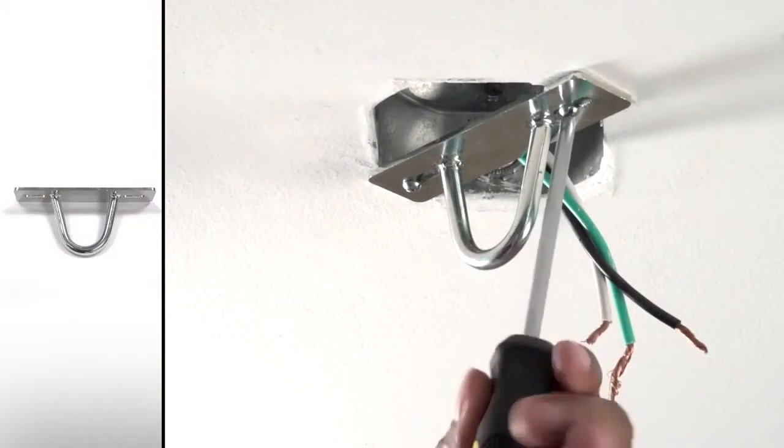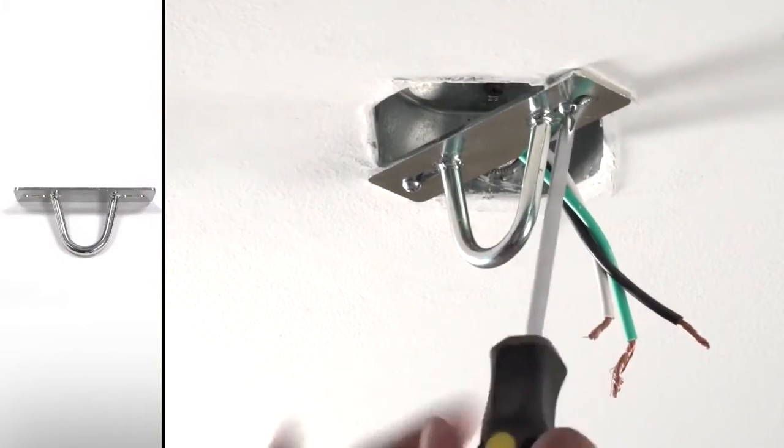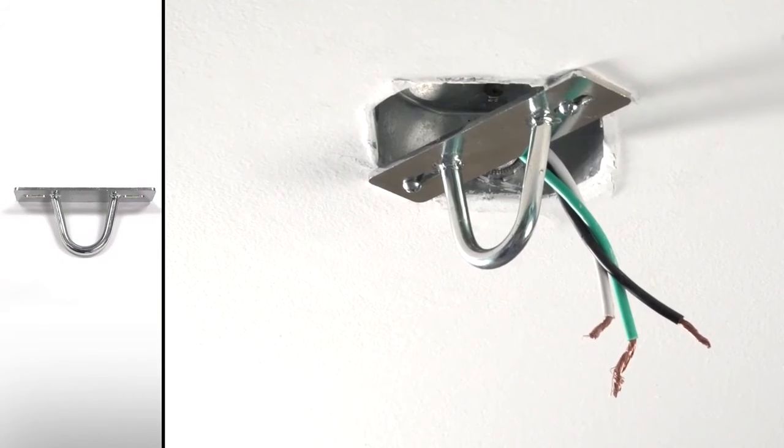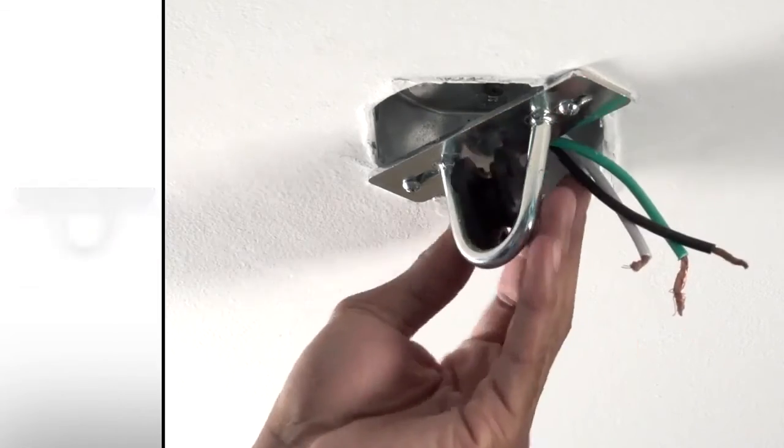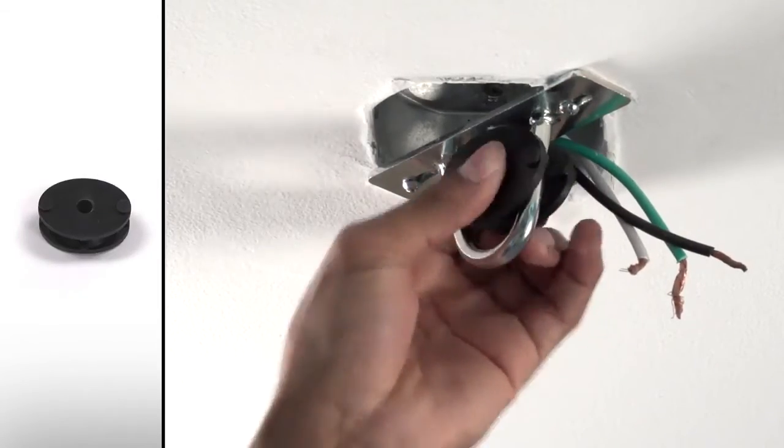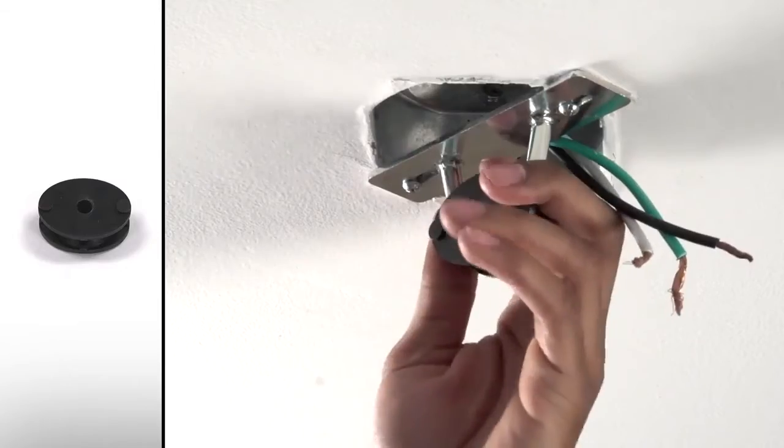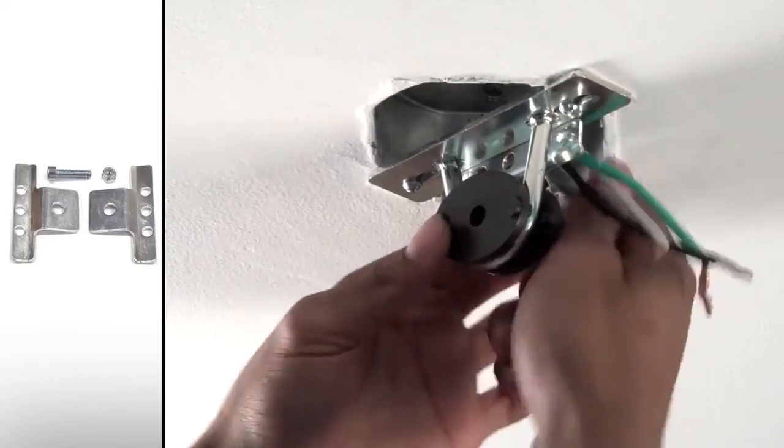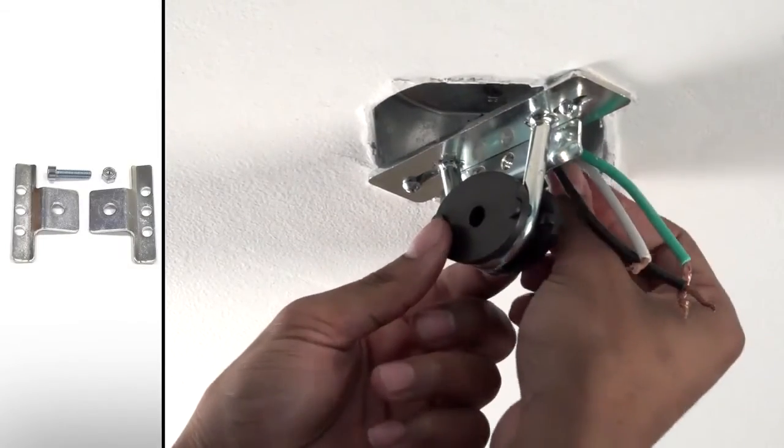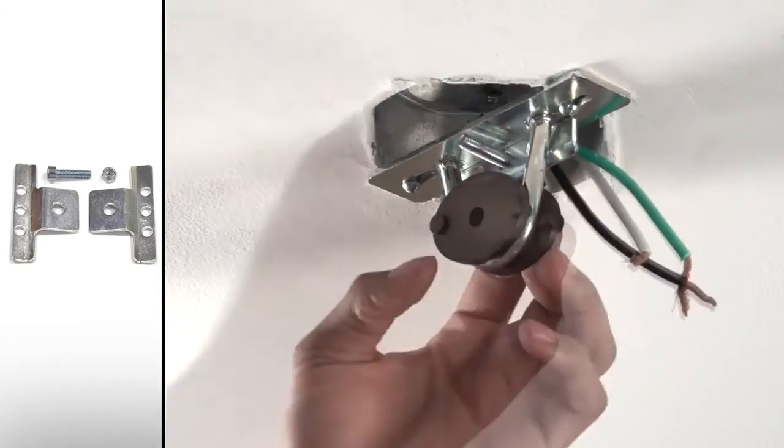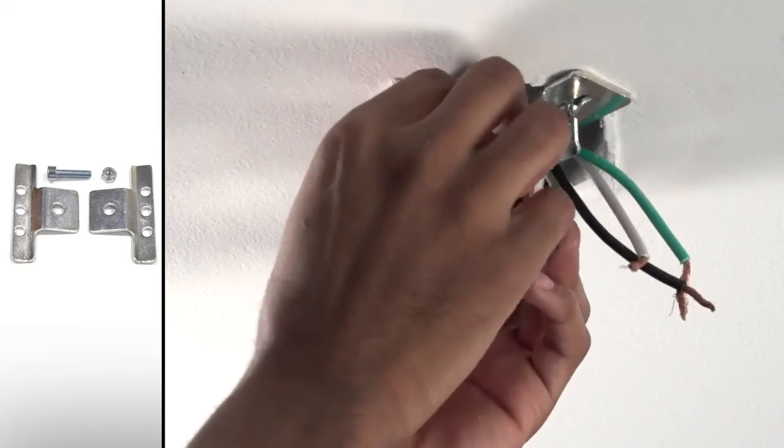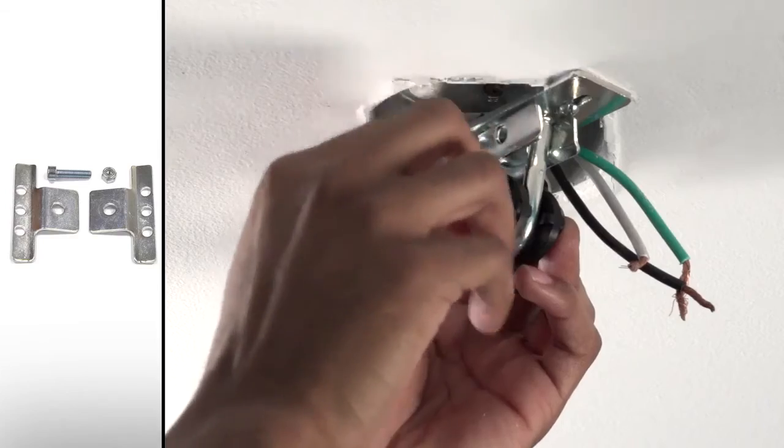Secure the mounting bracket to the outlet box using the hardware supplied with the outlet box. Secure the rubber bushing in the eye of the mounting bracket. Loosely install the mounting brace brackets with the provided hardware. The bolt should be inserted in the middle bolt hole on the brackets. Do not fully tighten the hardware.